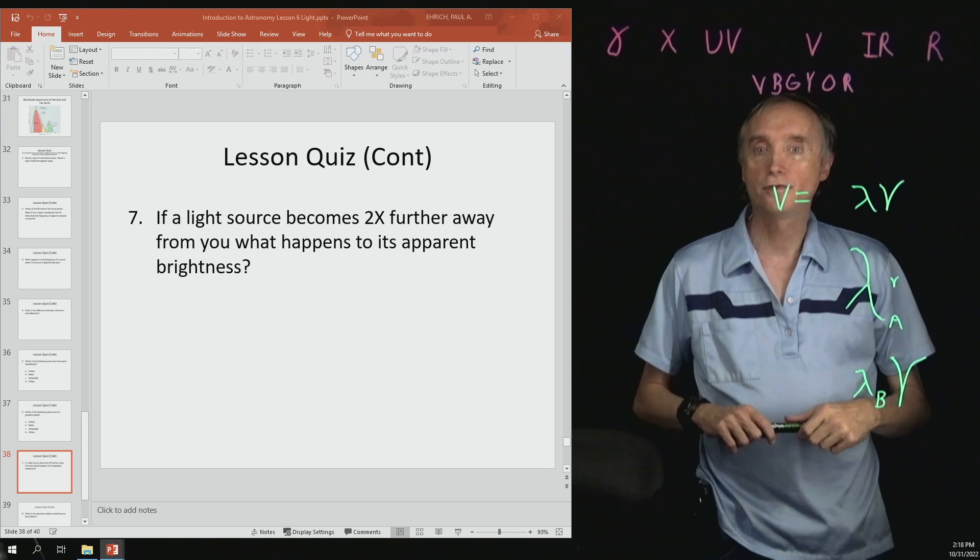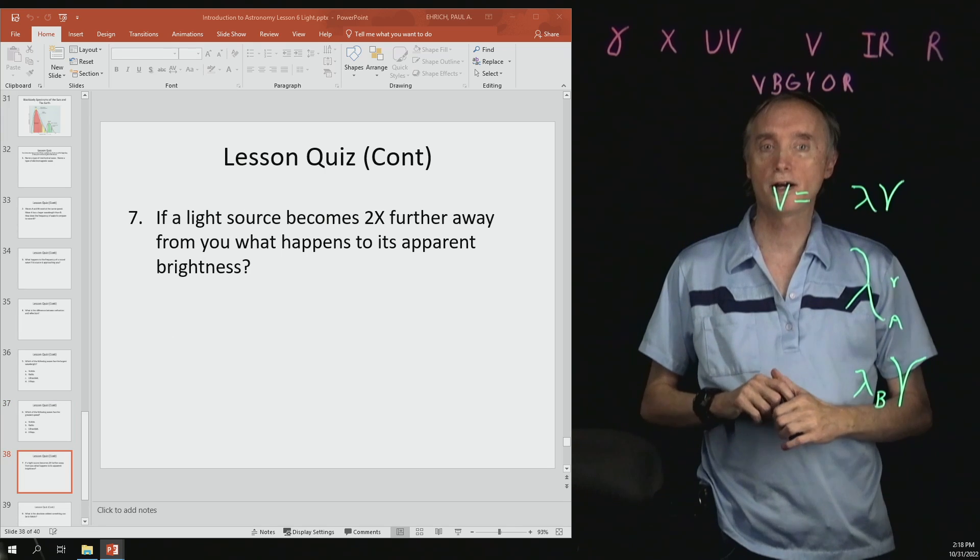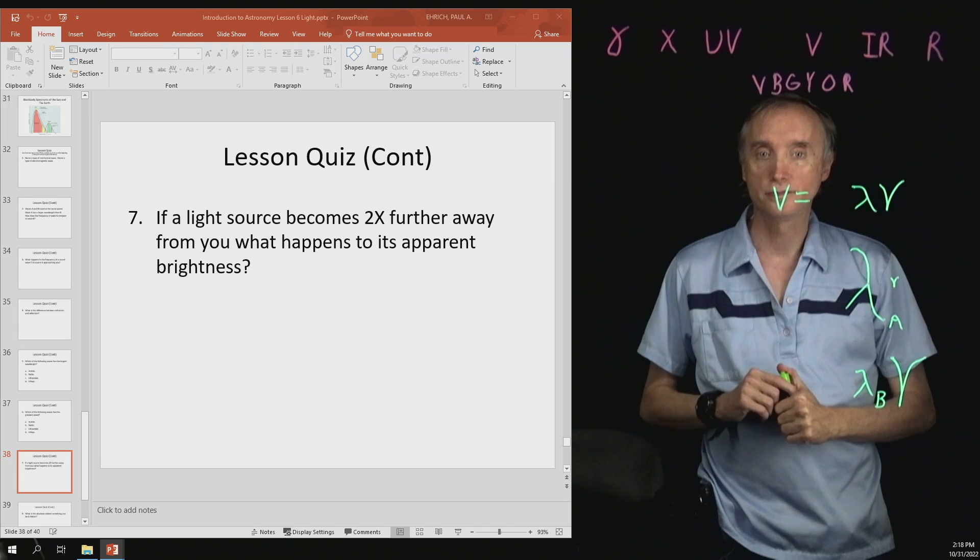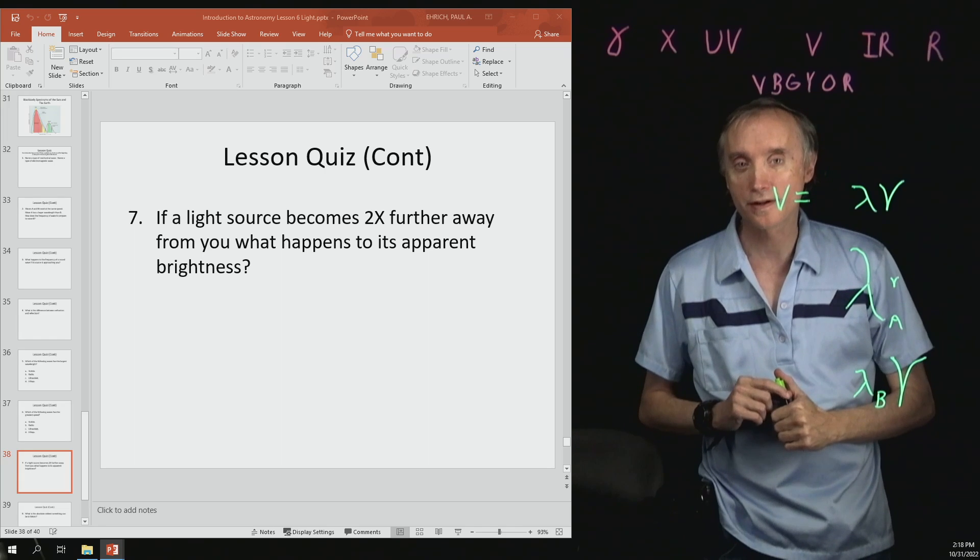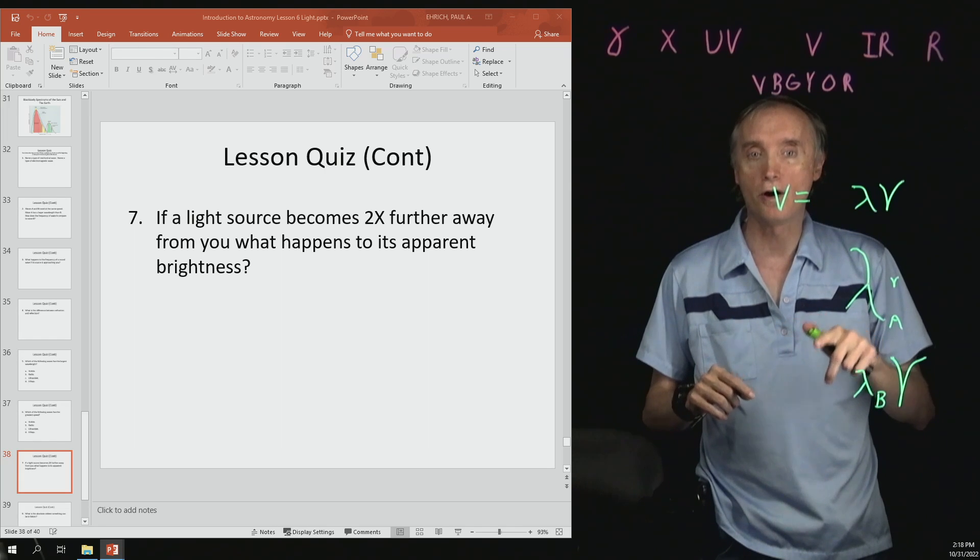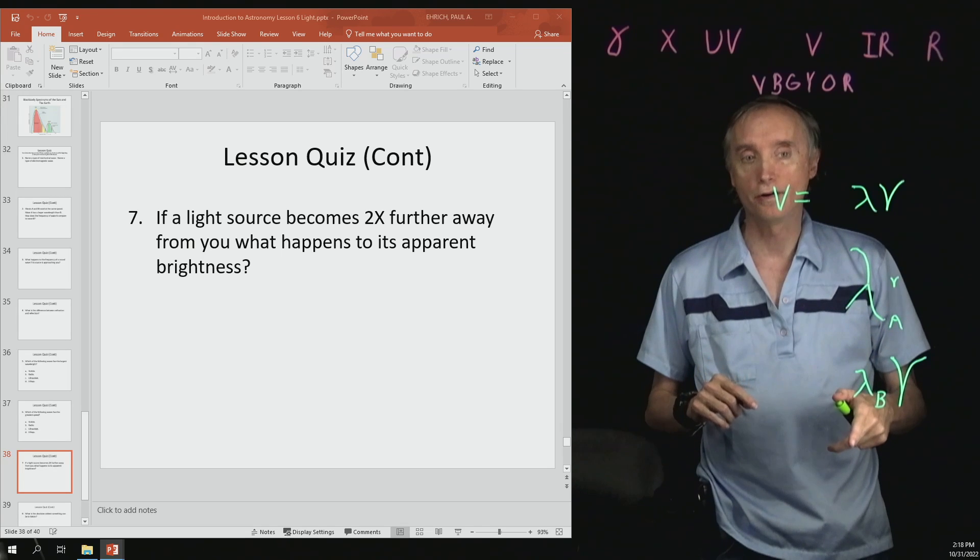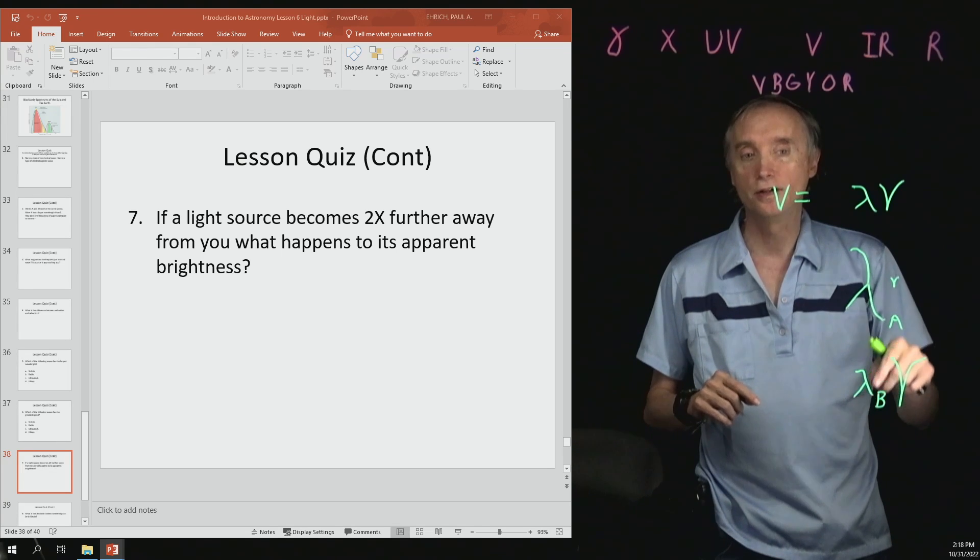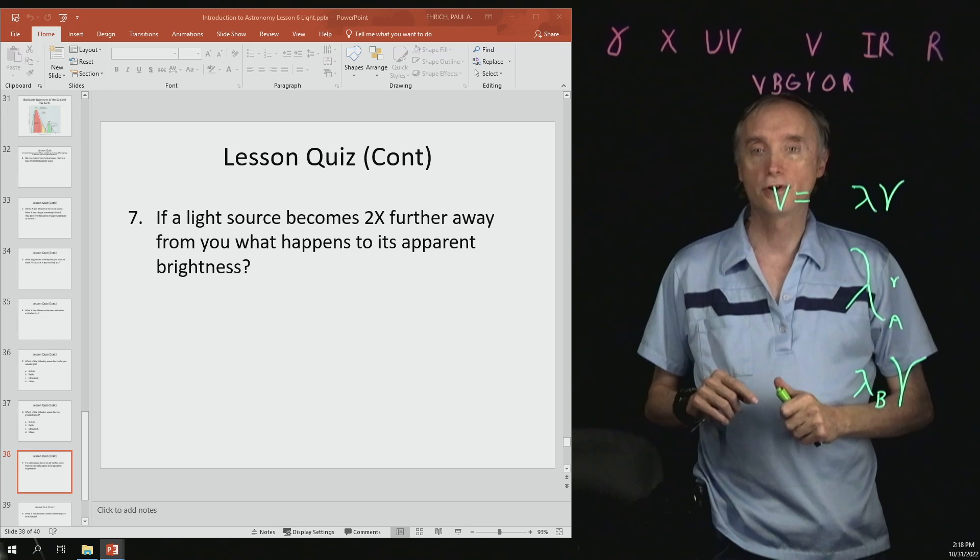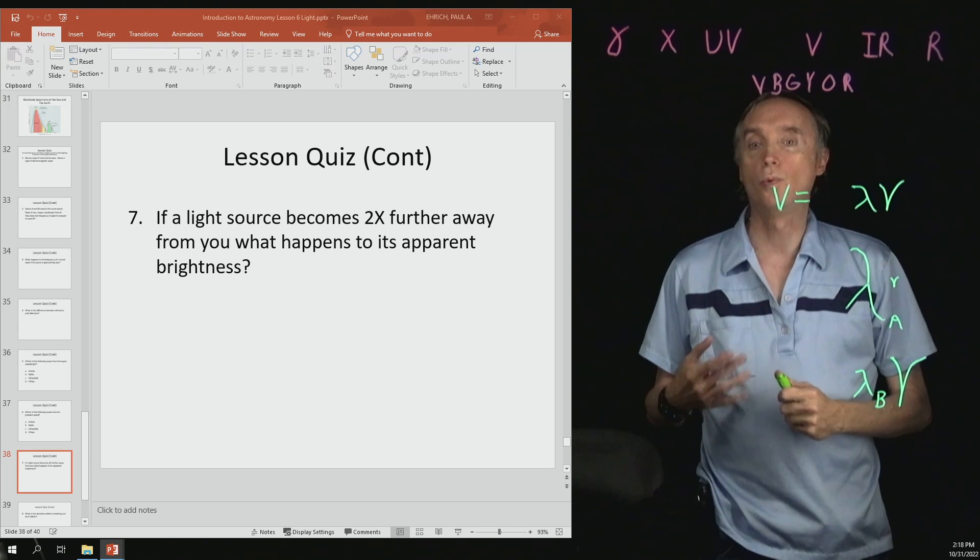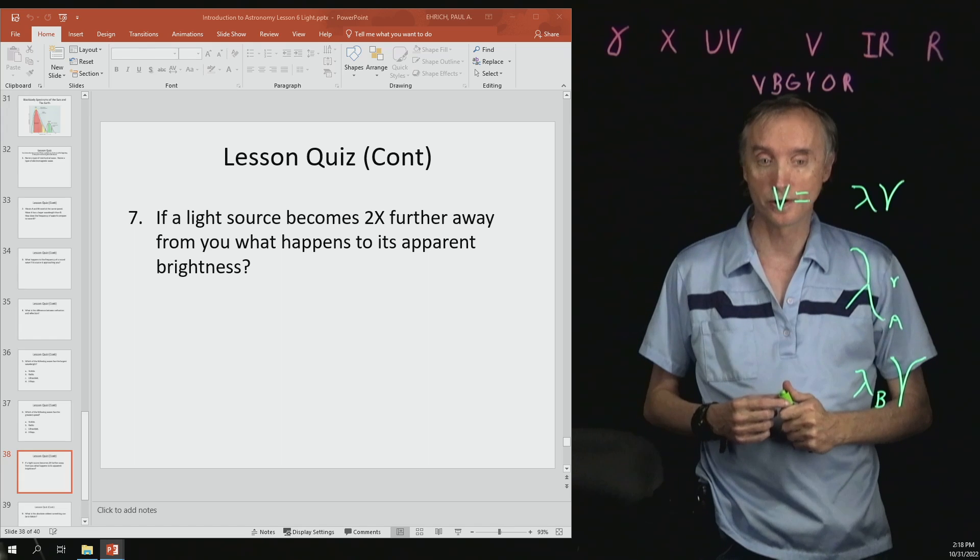Number seven, if a light source becomes two times further away, what happens to its apparent brightness? It's going to be one half. No, that's not right. Because what do you got to do? It's one over r squared, so it's one over two squared, which is going to be four. So you're going to say that it gets four times dimmer, or you could say it's one-fourth as bright as what it once was.